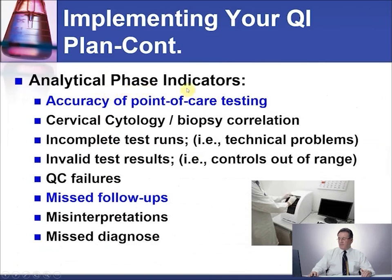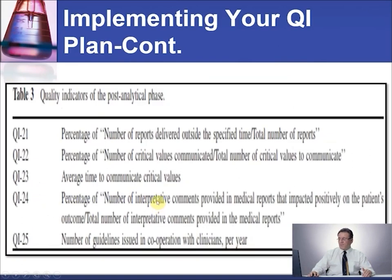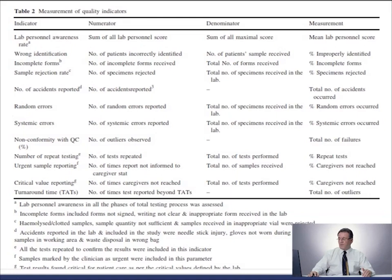For analytical phase indicators, examples include accuracy of point-of-care testing, missed follow-ups, QC failure, or misdiagnosis. For post-analytical indicators, some examples include critical value reporting, turnaround time, and customer satisfaction.